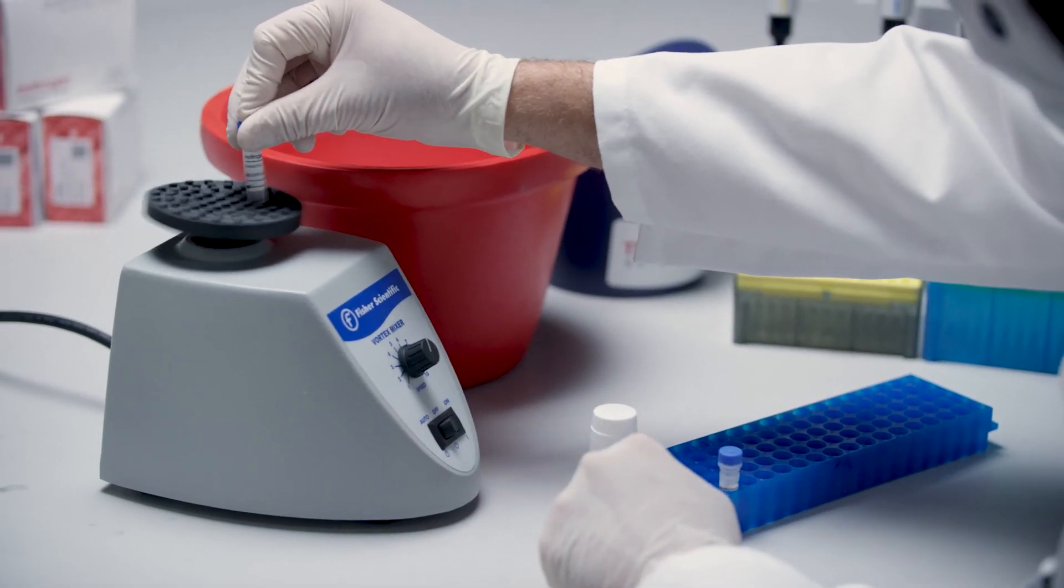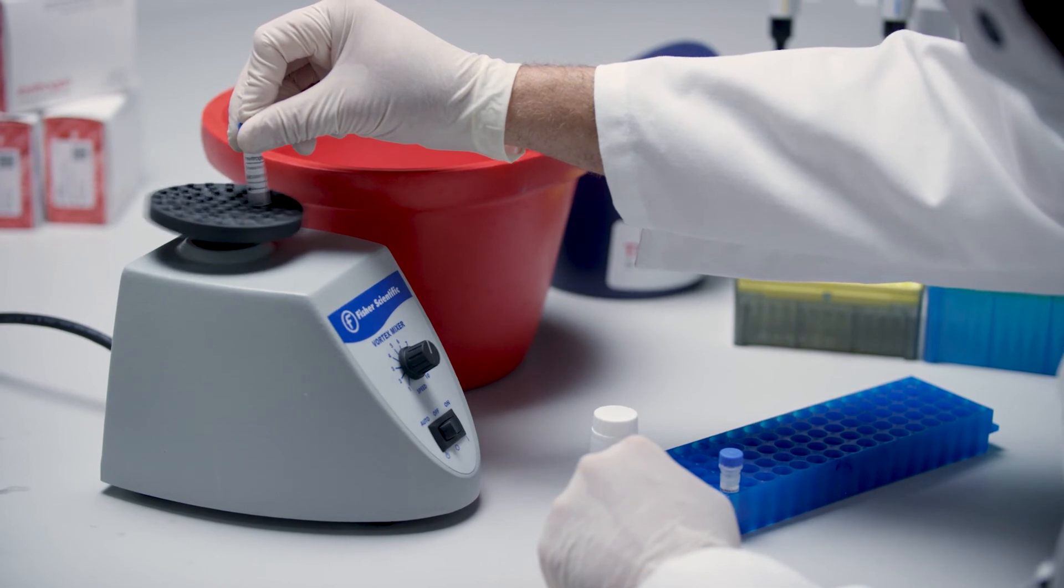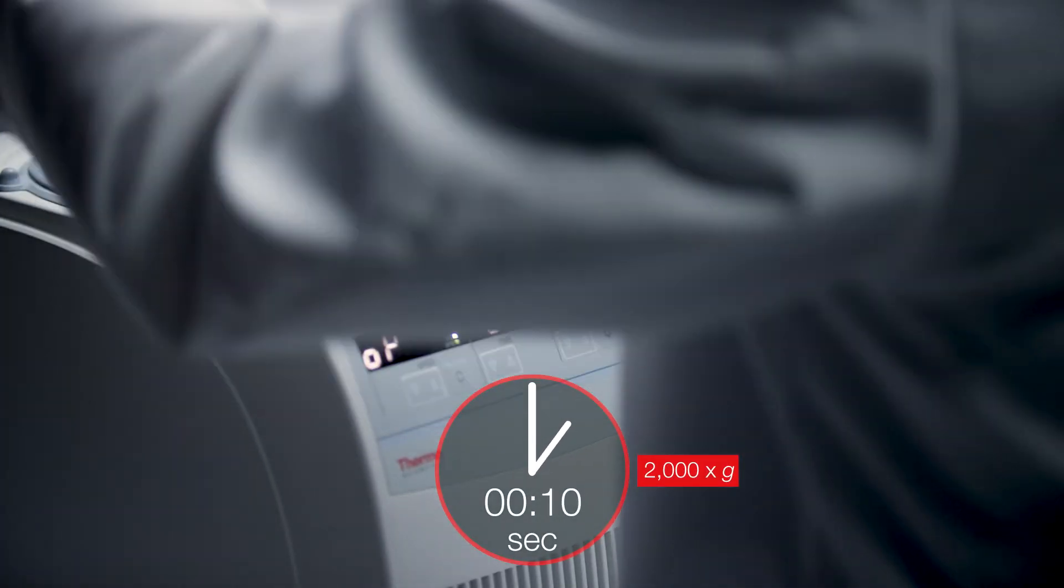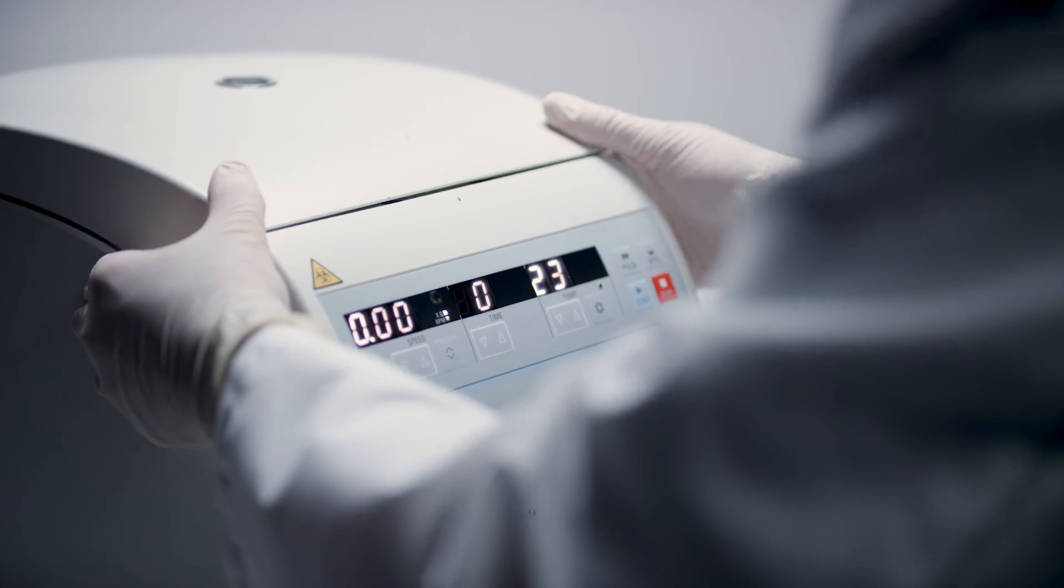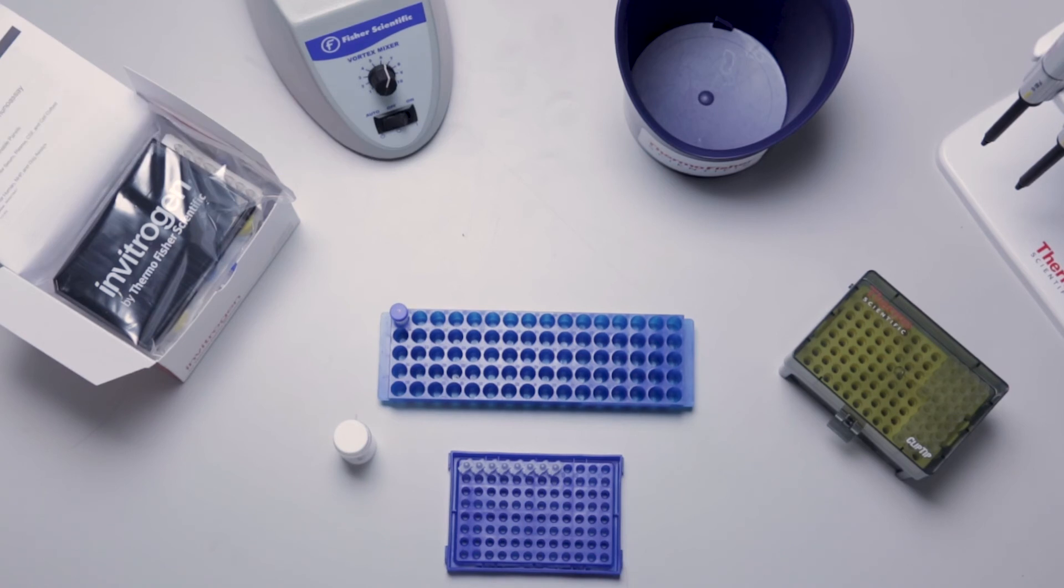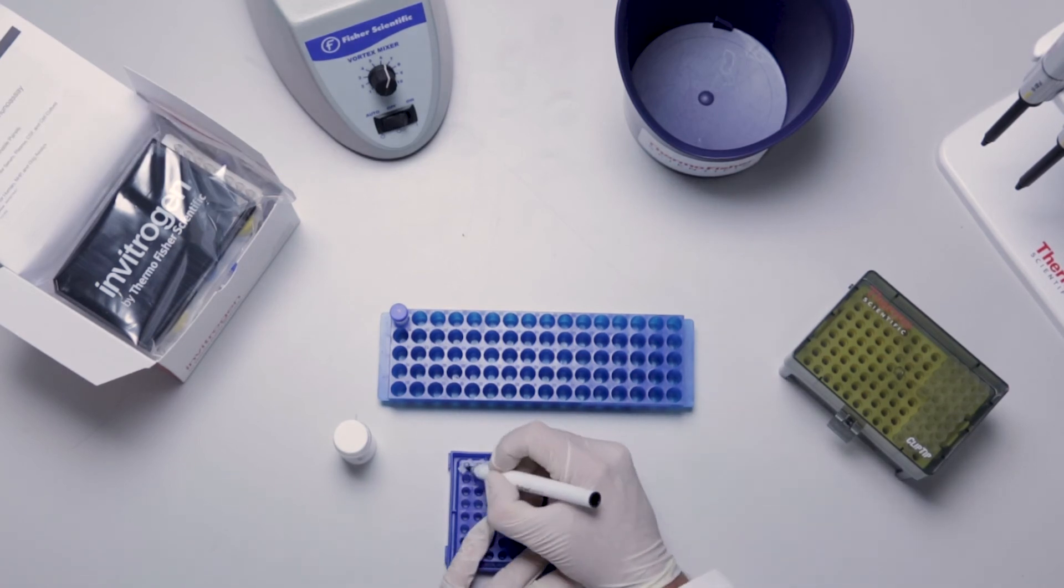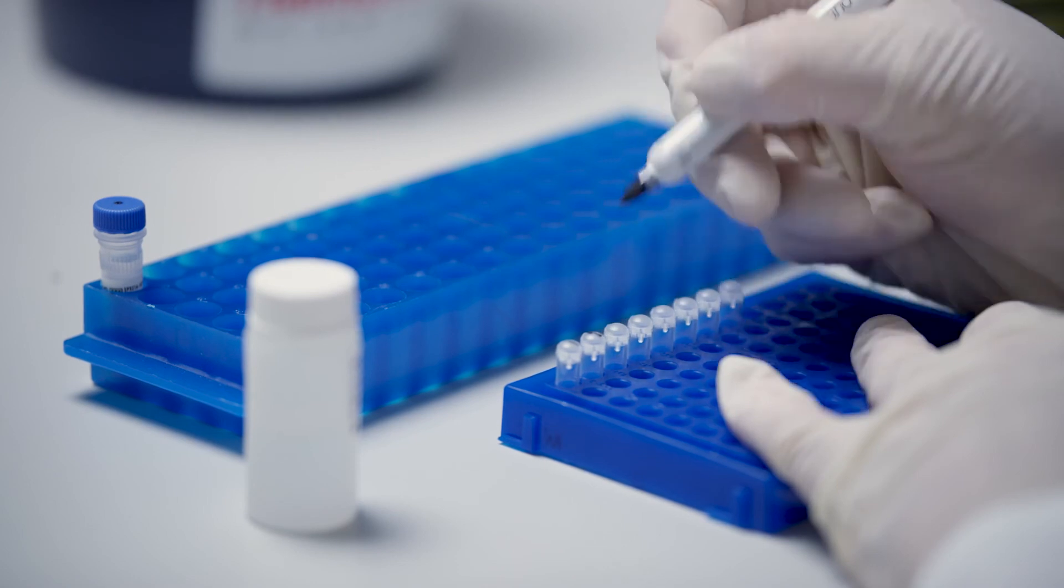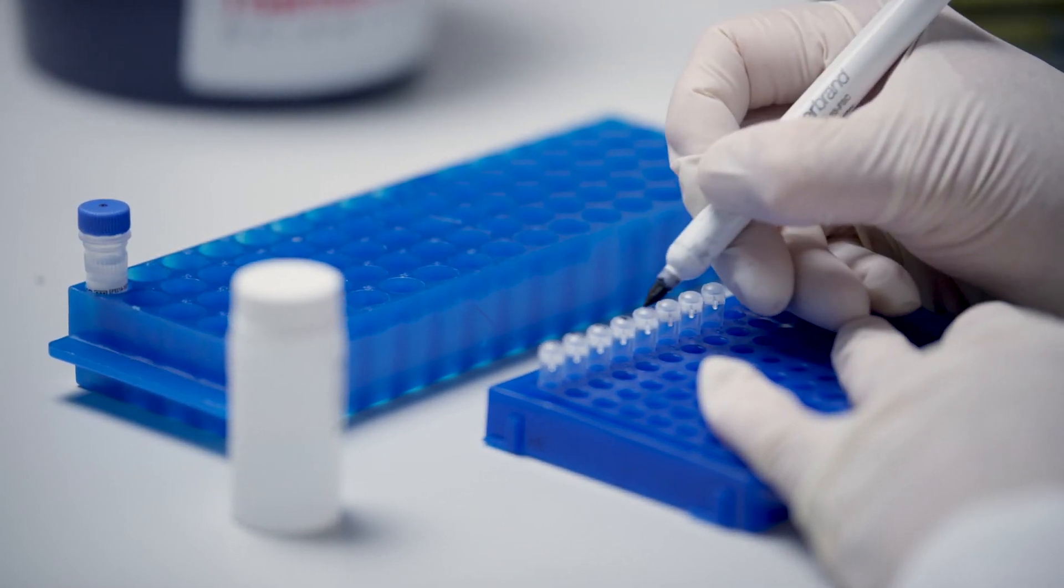Vortex the working antigen standard vial at high speed. Centrifuge at 2000 g for 10 seconds. Prepare a four-fold serial dilution of the working antigen standard vials using the eight-tube strip provided. Label tubes sequentially standard 1 through standard 7. Label the 8th tube for use as a background.